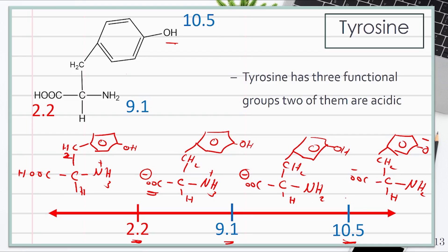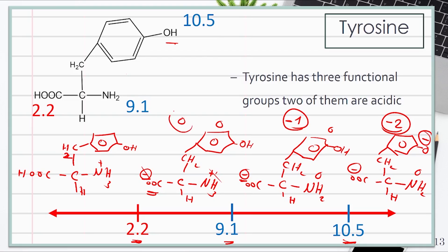Now let's calculate the charge for each form. For the fully deprotonated form, we have minus and another minus, and 0, giving a total charge of minus 2. For the next form, we have 1 minus, 0, and 0, so the total charge is minus 1. For the zwitterion form, we have minus, plus 1, and 0, so the total charge is 0. This form is the zwitterion form.